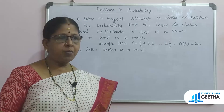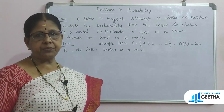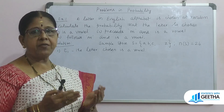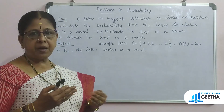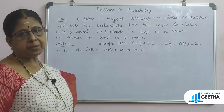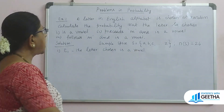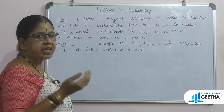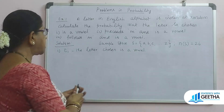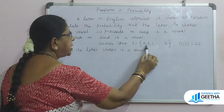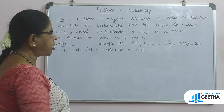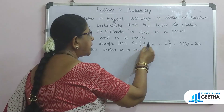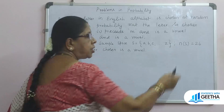To solve probability problems, we need to find the total number of cases and the number of favorable events. A letter is chosen from the English alphabet, so the number of sample points, N of S, is equal to 26.